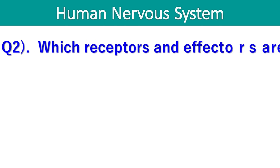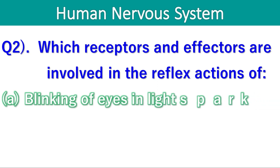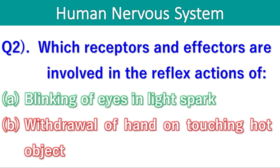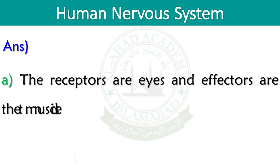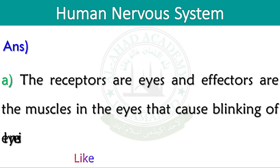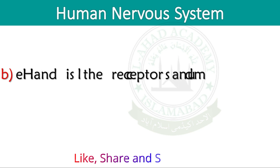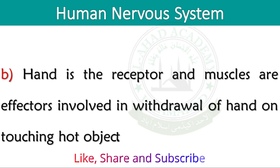Question number 2. Which receptors and effectors are involved in the reflex actions of blinking of eyes in light spark, and withdrawal of hand on touching a hot object? The receptors are eyes and effectors are the muscles in the eyes that cause blinking of eyes in light spark. The hand is the receptor and muscles are effectors involved in withdrawal of hand on touching a hot object.